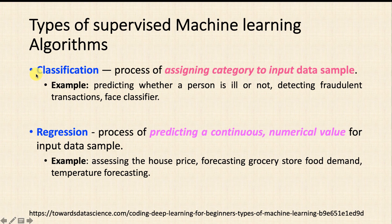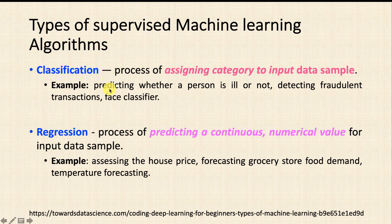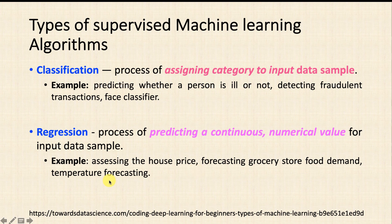In supervised learning you can solve two kinds of problems: classification and regression. Classification is the process of assigning a category to input data samples. Examples include predicting whether a person is ill or not based on diagnosis data and symptoms, detecting fraudulent transactions, and face classifiers. Regression is the process of predicting a continuous numerical value for input data samples. Examples include assessing house prices, forecasting grocery store food demand, and temperature forecasting.